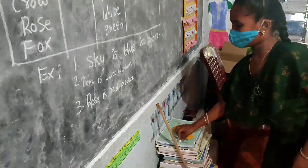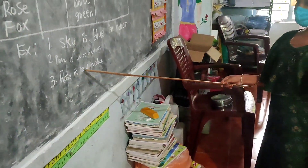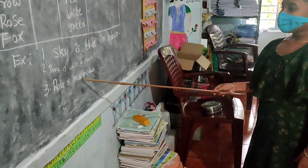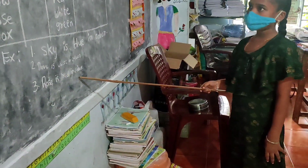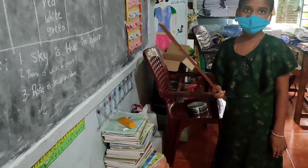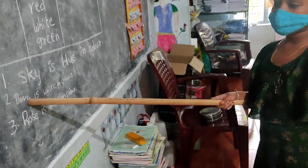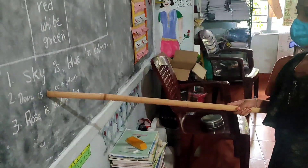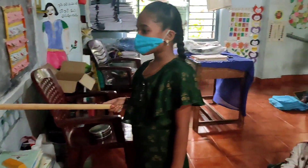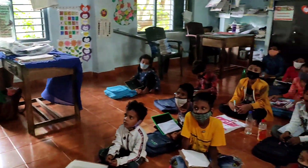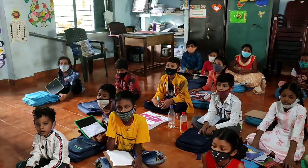Read the sentence. Rose is red in color. Second sentence — read that one. Rose is red in color. Very good. Go to your place.